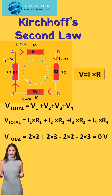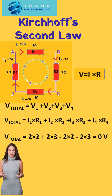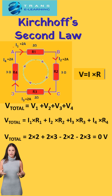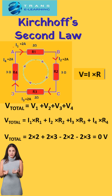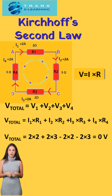as 2 Amperes — since it is a series circuit, the current remains the same — and multiplying with the respective resistances of 2 Ohms, 3 Ohms, 2 Ohms, and 3 Ohms, and adding all the voltages, we get 0 Volts. We can see that voltage 1 and voltage 3 cancel out due to the opposite direction of current, and voltage 2 and voltage 4 also cancel out due to the opposite direction of current.